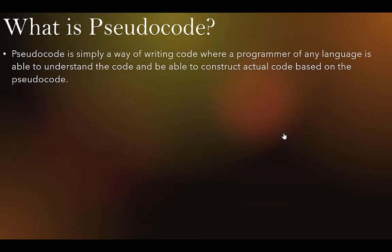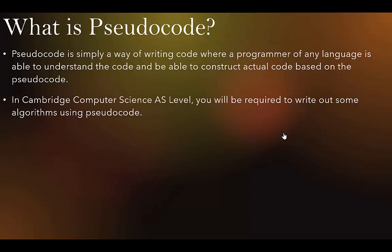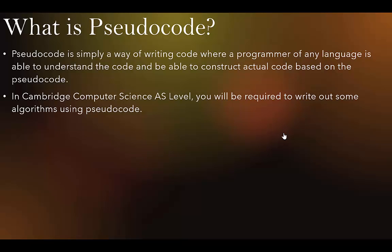So what is pseudocode? Pseudocode is simply a way of writing code where a programmer of any language is able to understand the code and be able to construct actual code based on the pseudocode that has been written. In Cambridge Computer Science AS Level, you're going to be required to write out some algorithms using pseudocode.